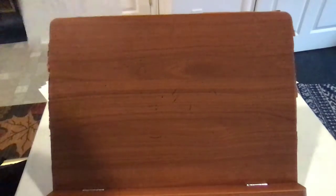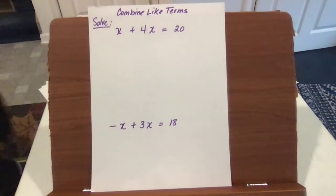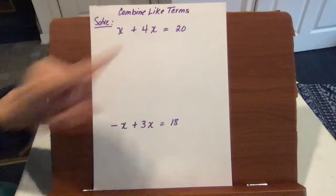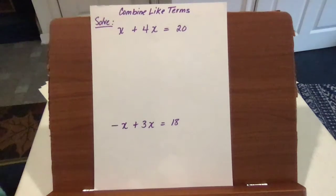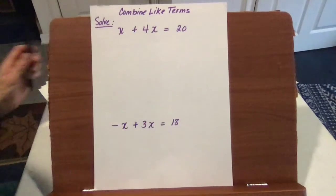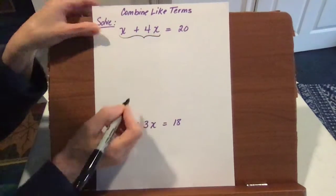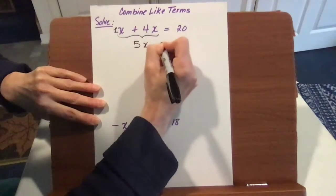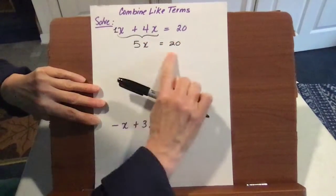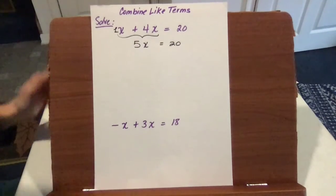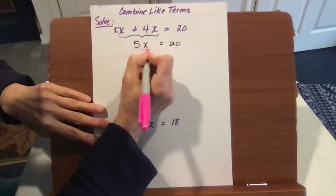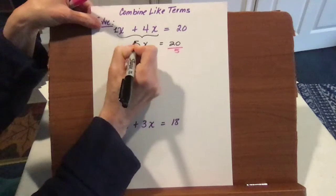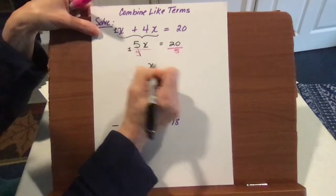Now we want to look at combining like terms and solving equations. We would combine on both sides while solving for the variable. So x plus 4x are like terms — it's 1x plus 4x, which is 5x, still equals 20. Always keep your equation intact. Now invoke the reverse of the order of operations: divide by five on both sides to get x equals four.